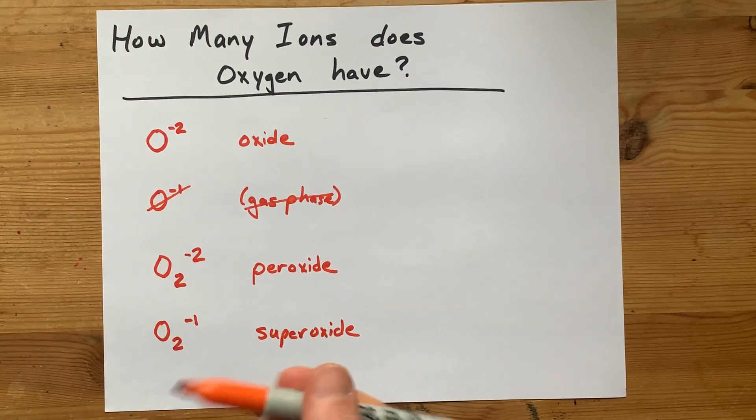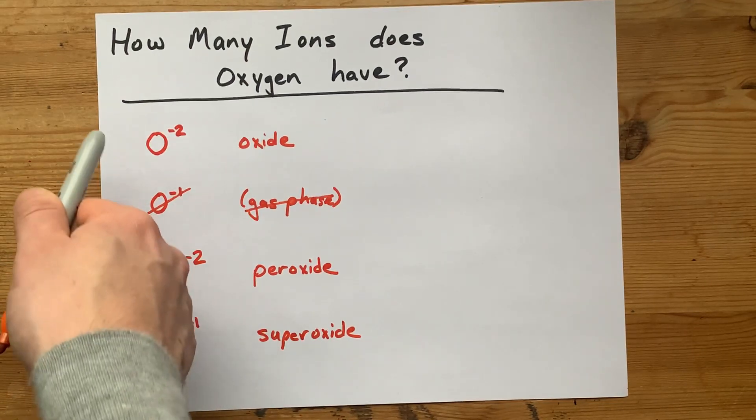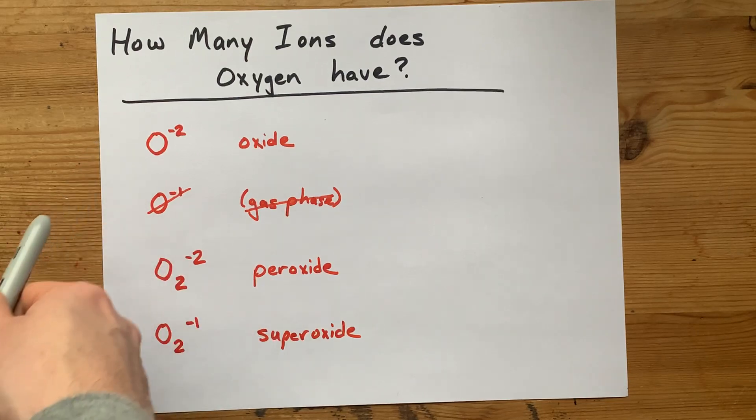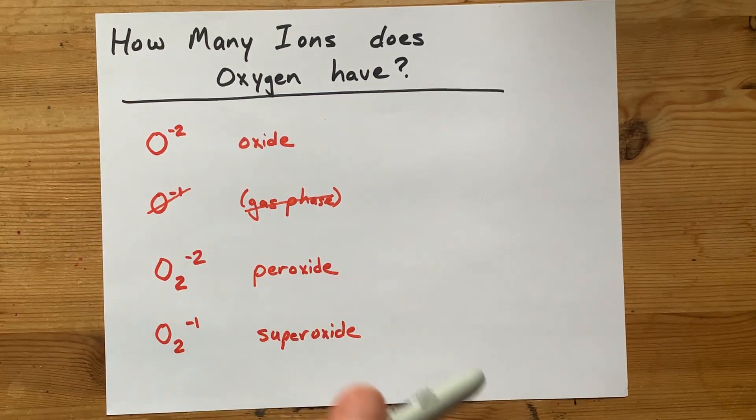These are all of the ions that I know of that are moderately stable that are made of just oxygen. I hope this is what that student had in mind when they asked, and best of luck.